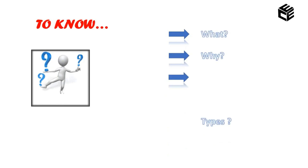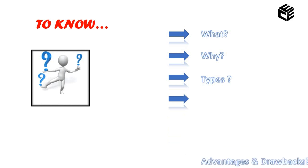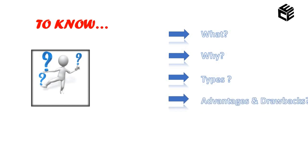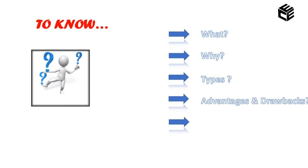Whenever you heard the term control systems, you might have raised some questions: what is a control system, why we are using a control system, what are the types of control system, what are the advantages and drawbacks, and what are the applications related to this field? Let's see one by one.